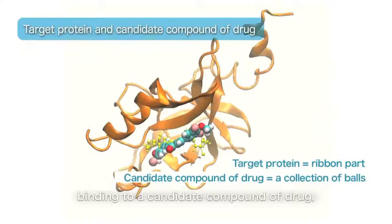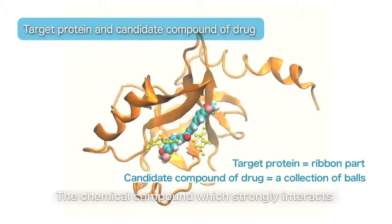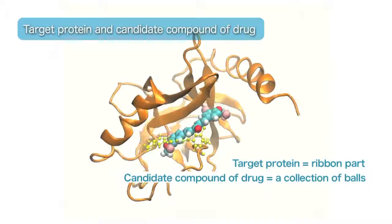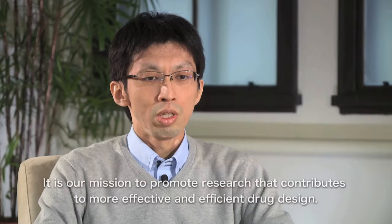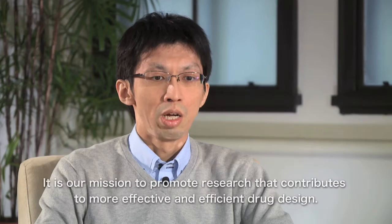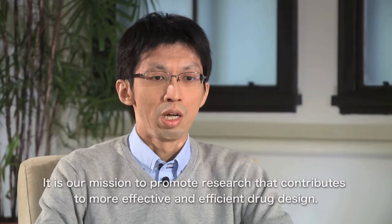This is the behavior of a target protein binding to a candidate drug compound, simulated by the K-computer. The chemical compound which strongly interacts with the target protein in vivo causes a disease. Yamashita says the accuracy of finding those compounds has drastically increased with the help of computer simulation, enabling more efficient and effective drug development.